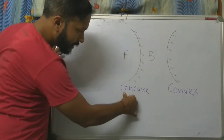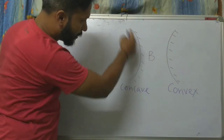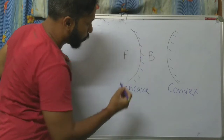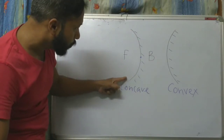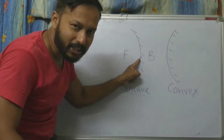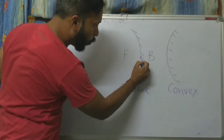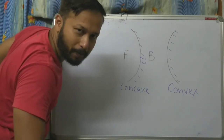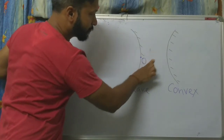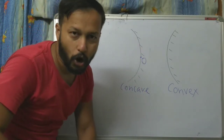First of all, let us take the concave mirror. On the concave mirror, the exact midpoint of the surface is called the pole or optical center. We will name it O. So this point O is the pole or optical center.